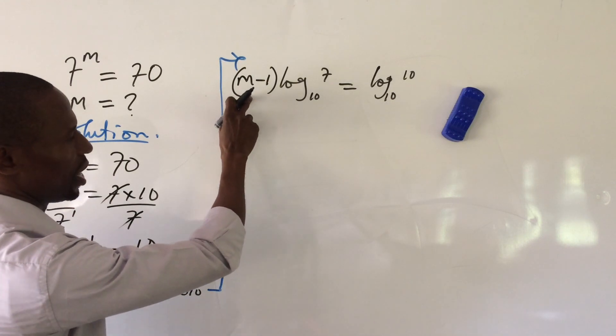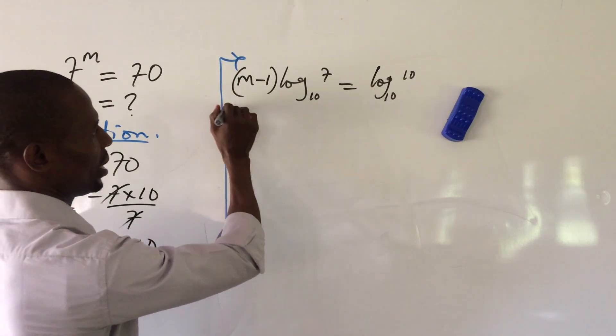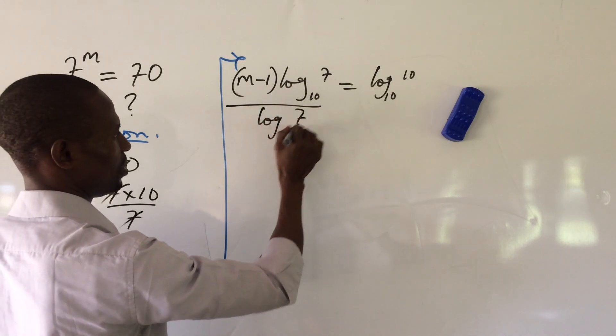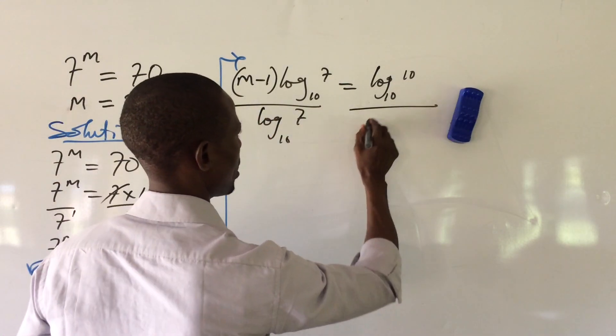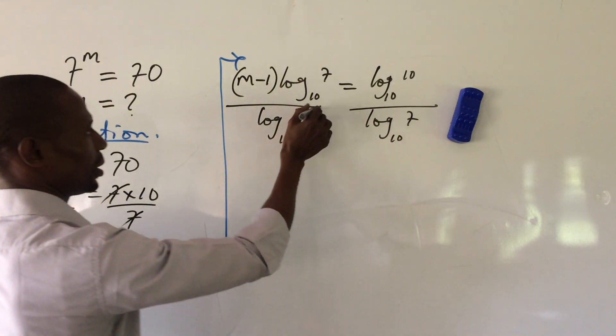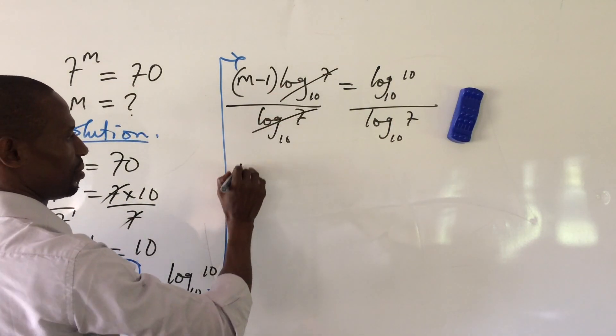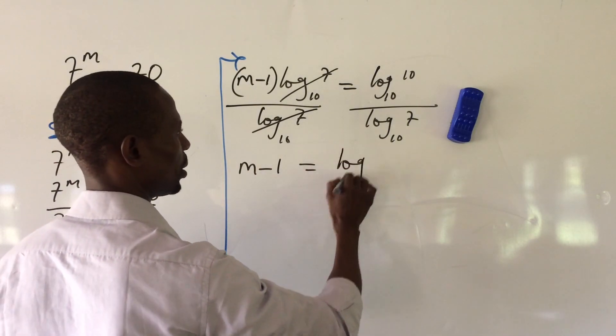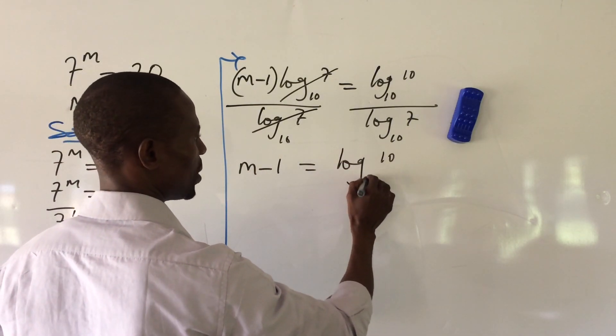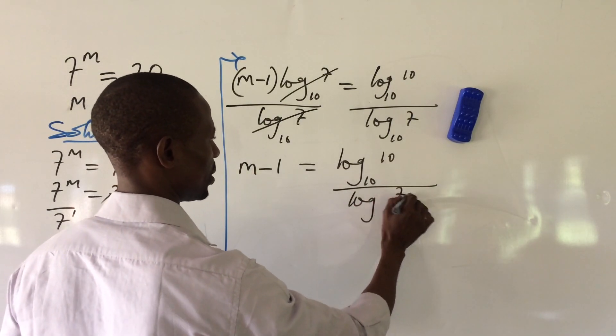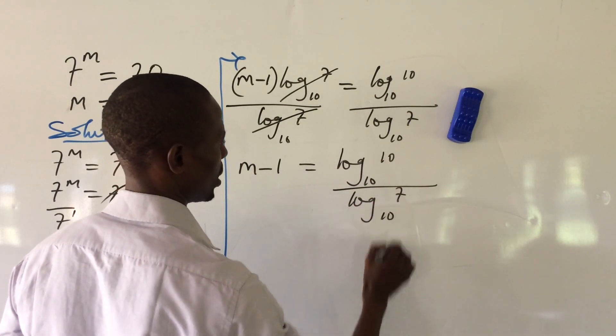We are looking for m. So we divide through by log 7 base 10. We have log 7 base 10 on this other side by log 7 base 10. This and this will leave. So we're left with m minus 1 equal to log 10 base 10 over log 7 base 10.